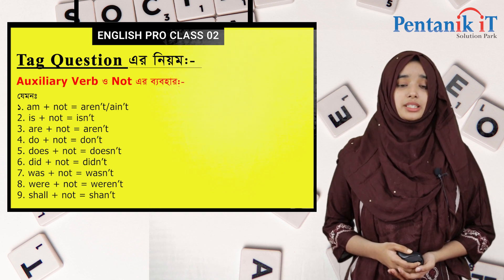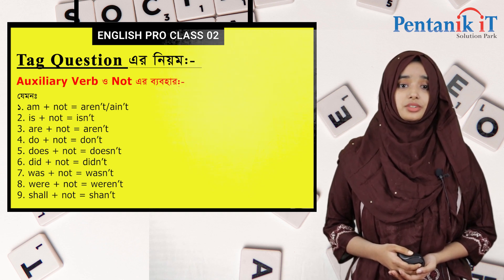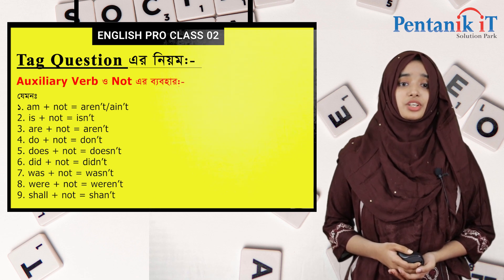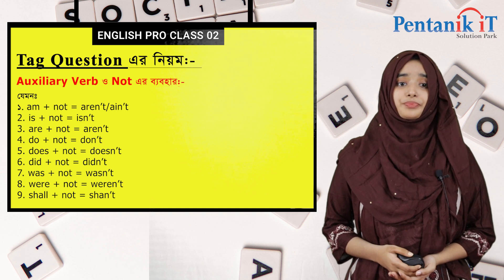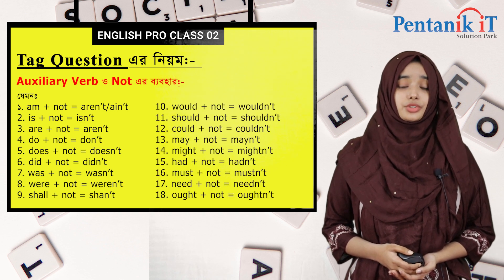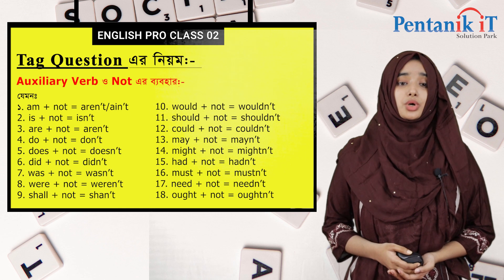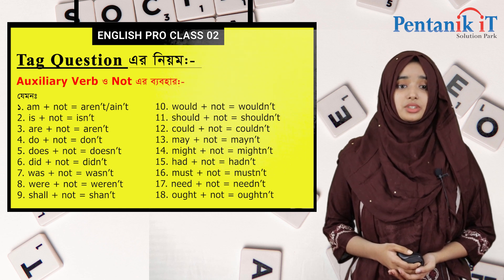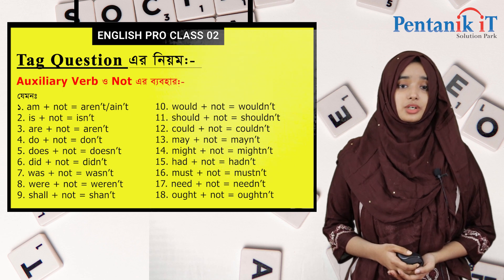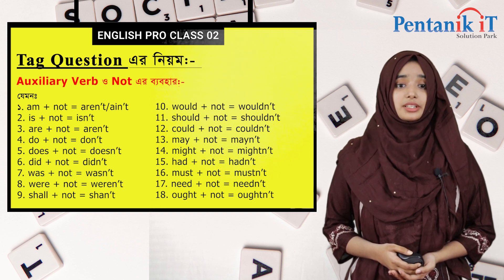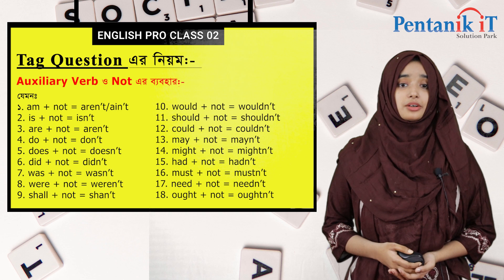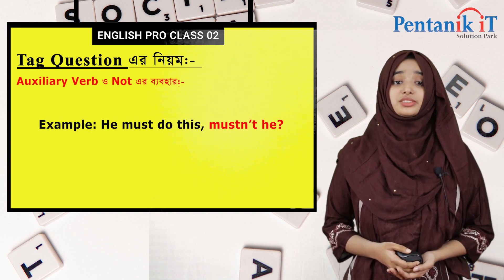Did not, does not, was + not = wasn't, were + not = weren't, shall + not = shan't, would + not = wouldn't, should + not = shouldn't, could + not = couldn't, may + not = may not, might + not = might not, had + not = hadn't, must + not = must not, need + not = needn't. He must do this work, must not he?